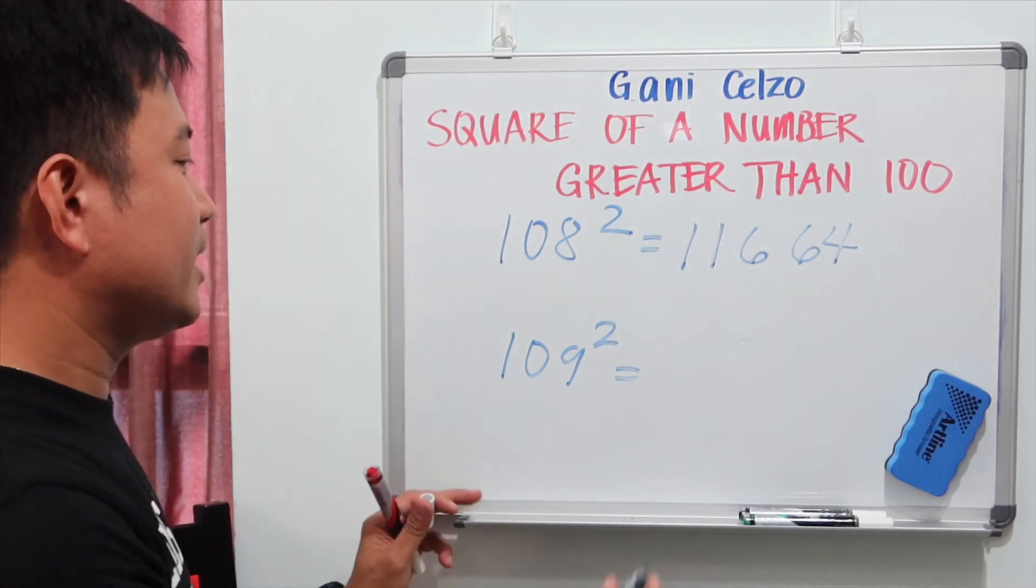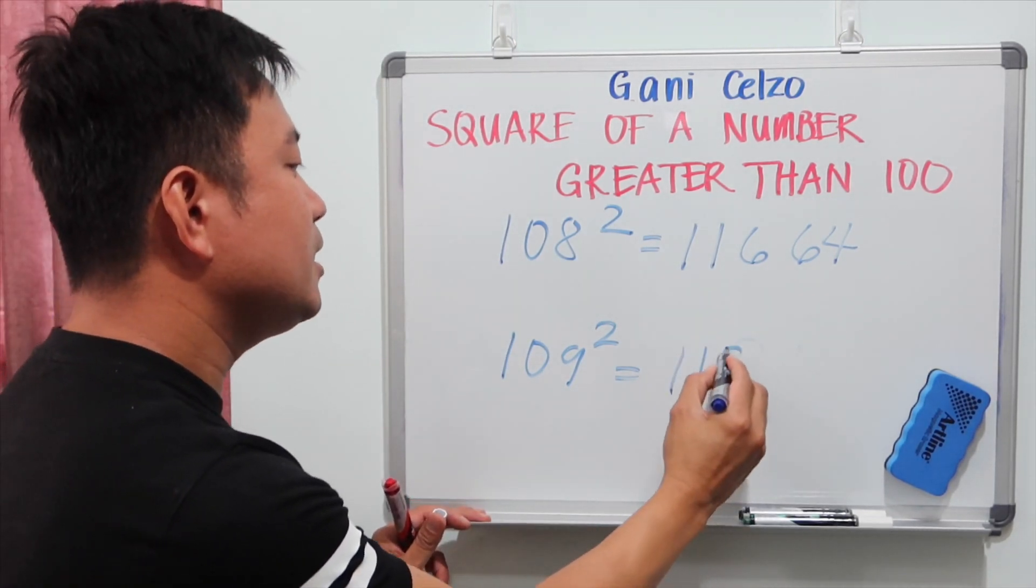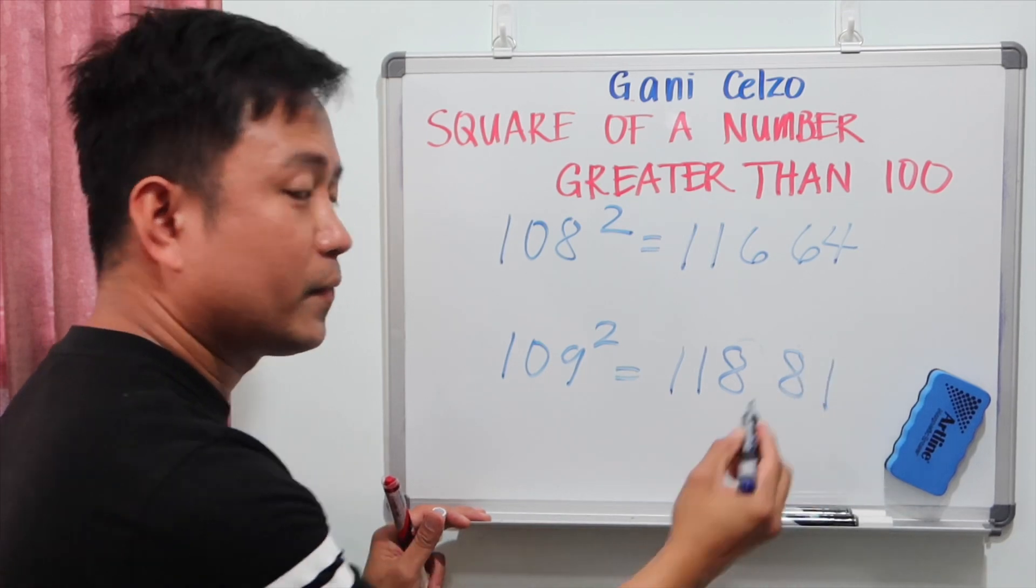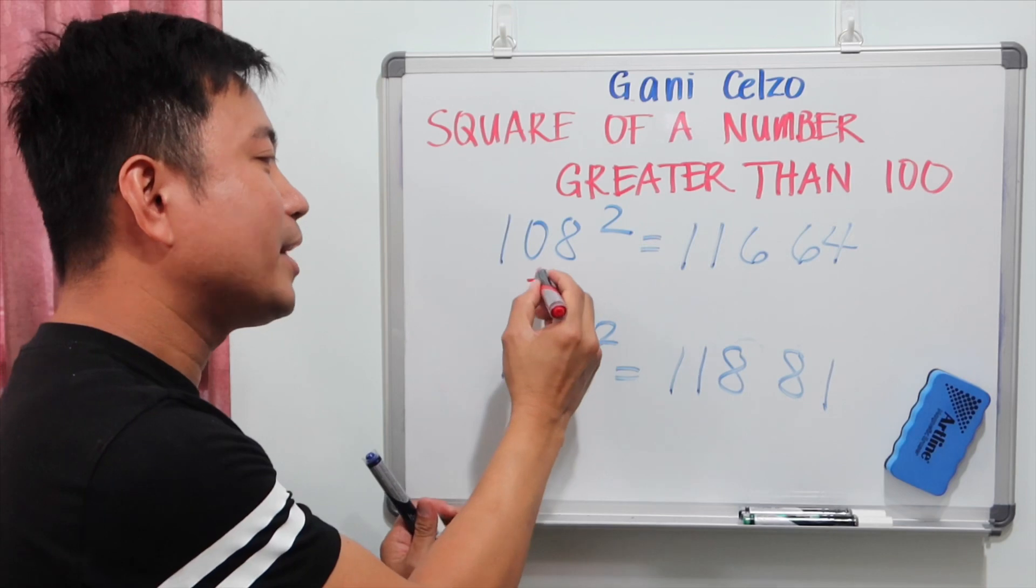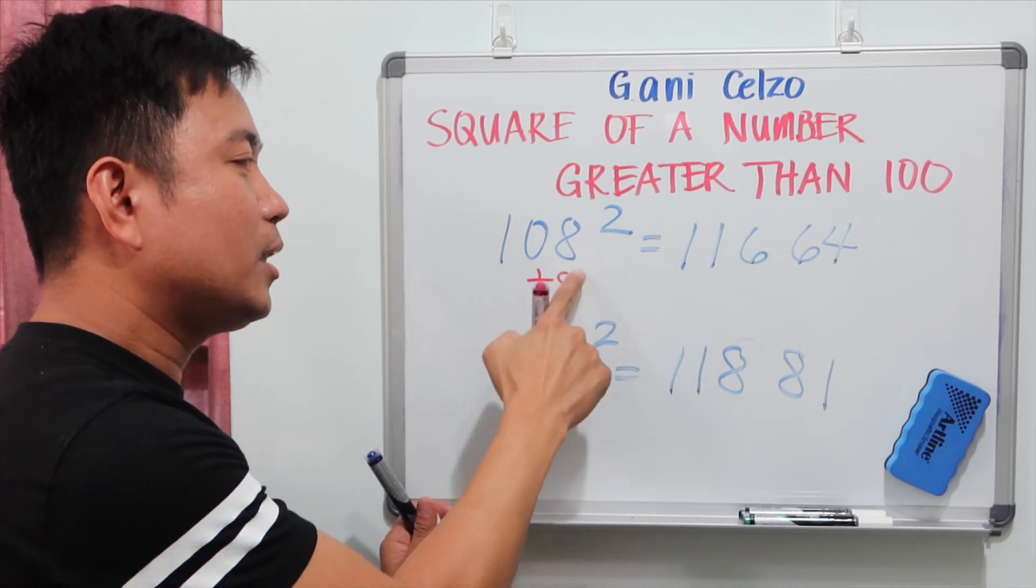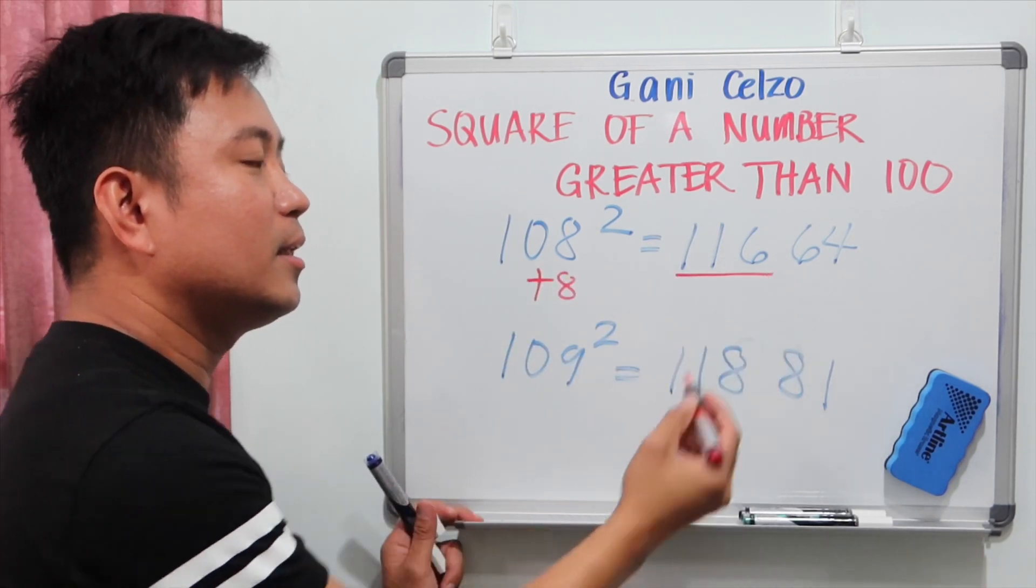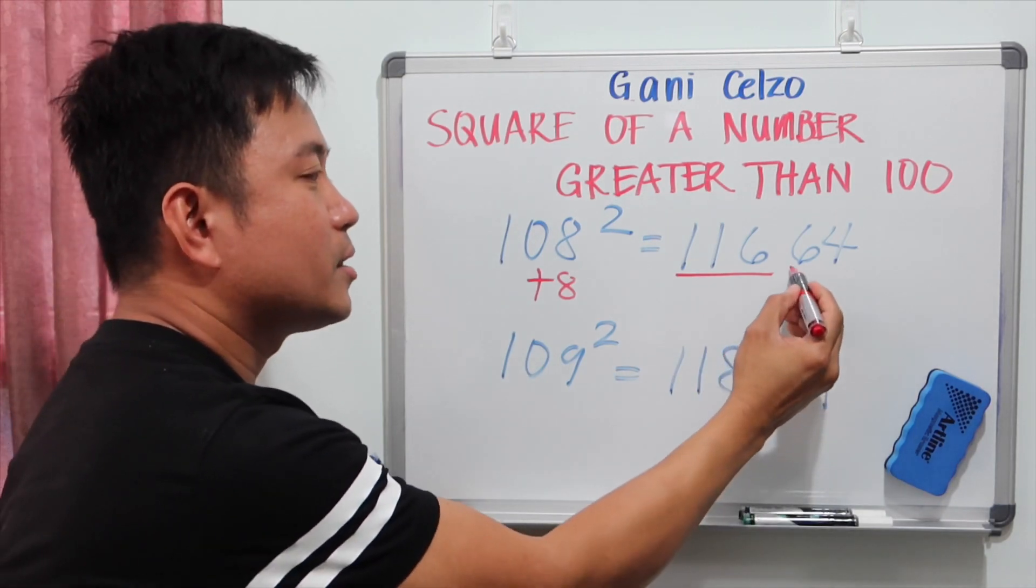The second, 118, 81. So for the first example, that's 8 more than 108. So we need to add 8. 108 plus 8, that's 116. 8 square, you get 64.